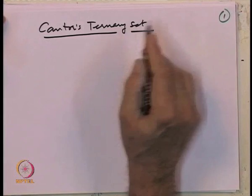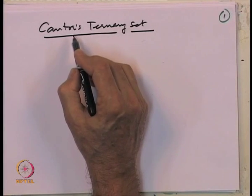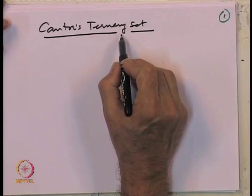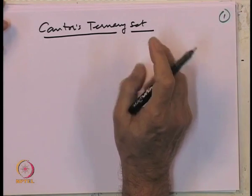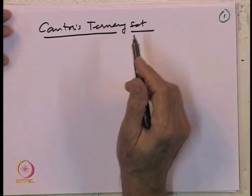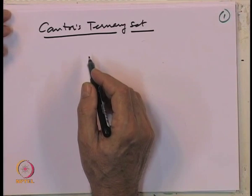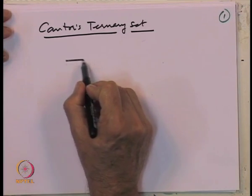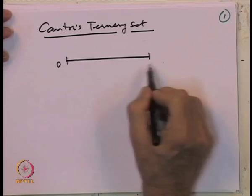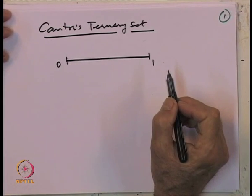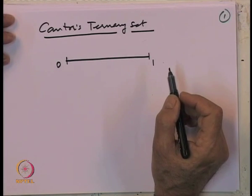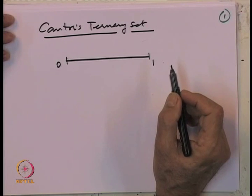It is called Cantor's ternary set because it was first defined by the mathematician Georg Cantor, and 'ternary' because it involves ternary expansions of real numbers. We are going to construct Cantor's ternary set. As step 1, we start with the interval [0, 1].